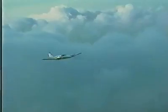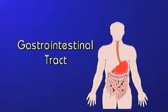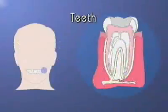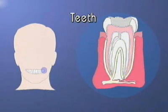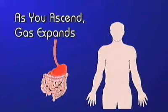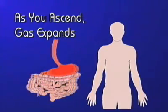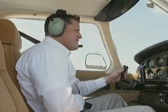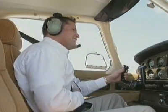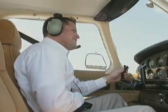During the ascending phase of a flight, you are more likely to develop problems in the gastrointestinal tract. In rare occasions, teeth may be the source of gas expansion problems. As you ascend, gas expands in the stomach and the intestines. This can cause abdominal pain and, in severe cases, may even cause fainting.